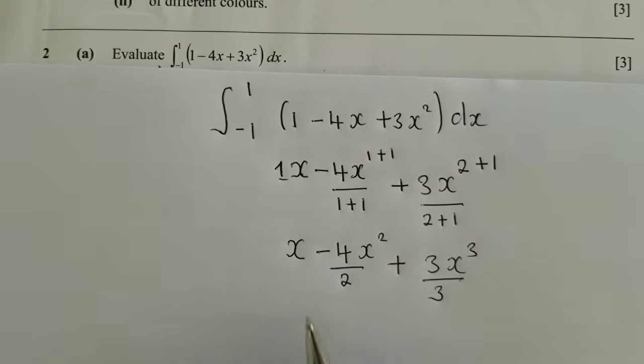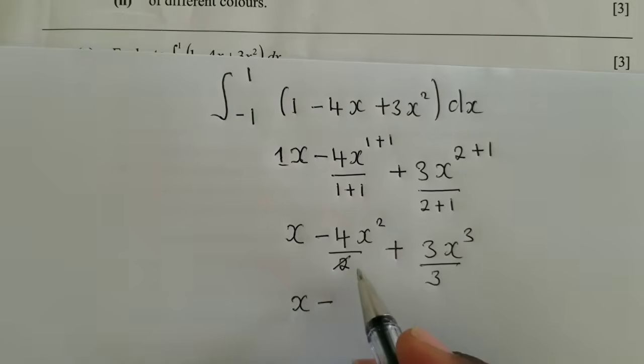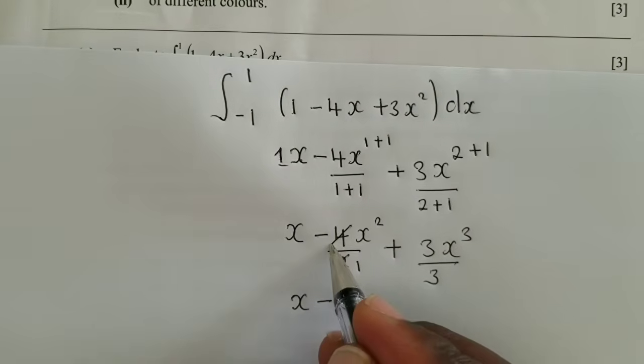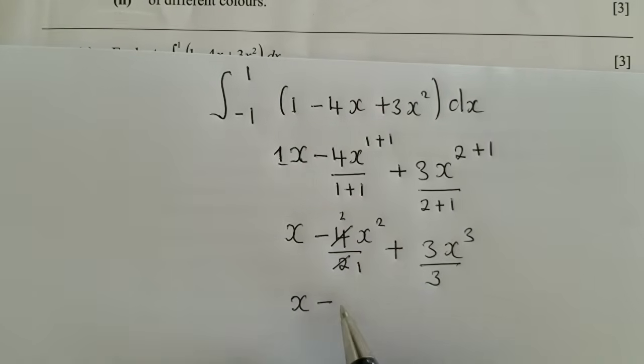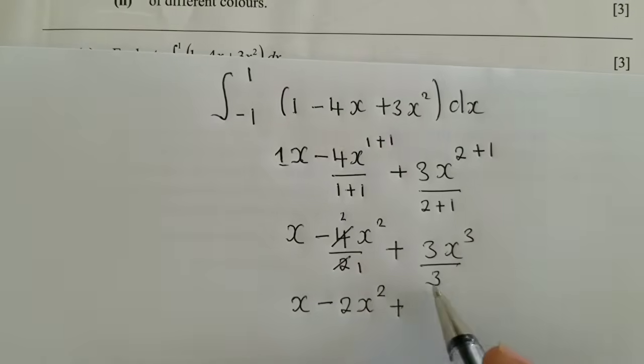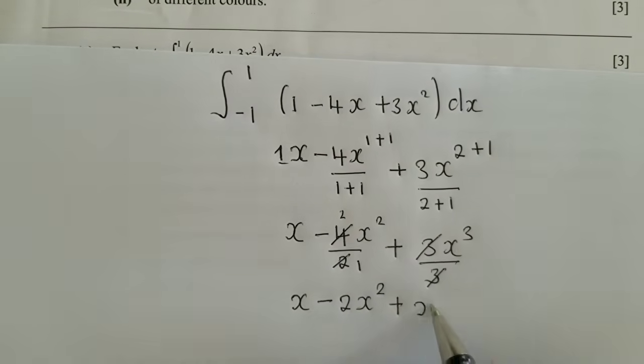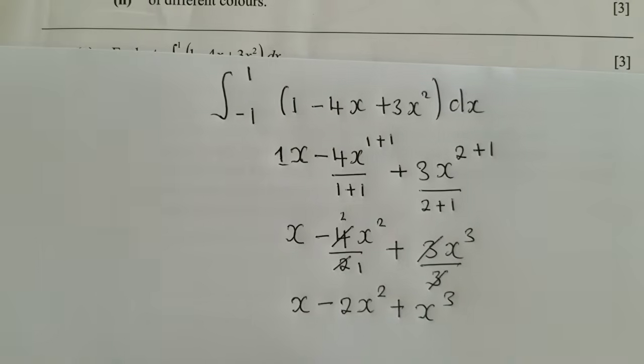Alright, so we continue cleaning up. So we have x minus 2 into 2, it's 1. In 2 negative 4, it's a 2. So we have a 2x power 2 plus 3 into 3, it's 1. In 2 3 here, it's 1. We just have a x power 3 there.